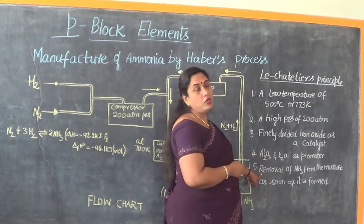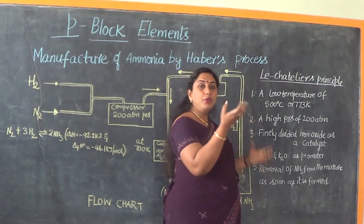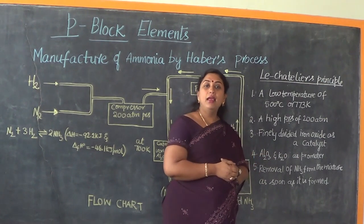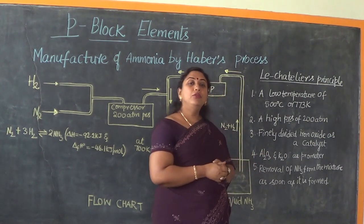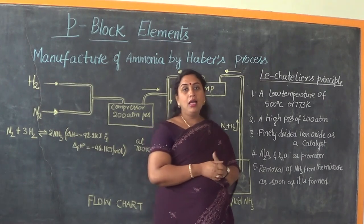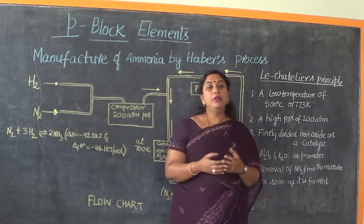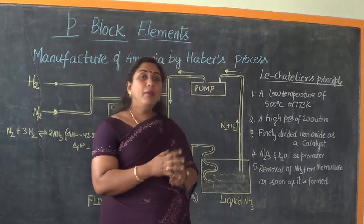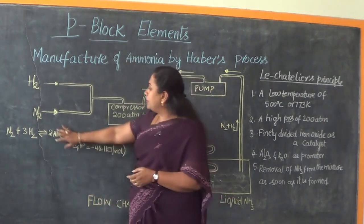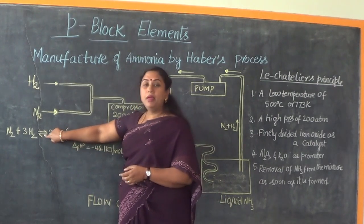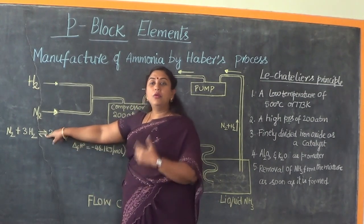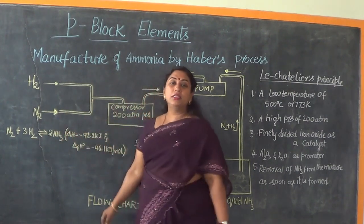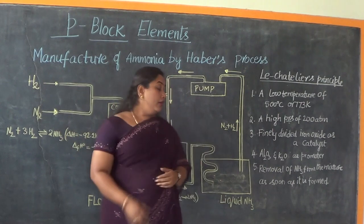Once we obtain ammonia, it has to be removed from the reacting mixture. The moment we remove ammonia from the mixture, equilibrium gets disturbed and the system proceeds to produce more and more ammonia — meaning the equilibrium shifts to the right. This is the most useful method we can employ to maximize ammonia production.